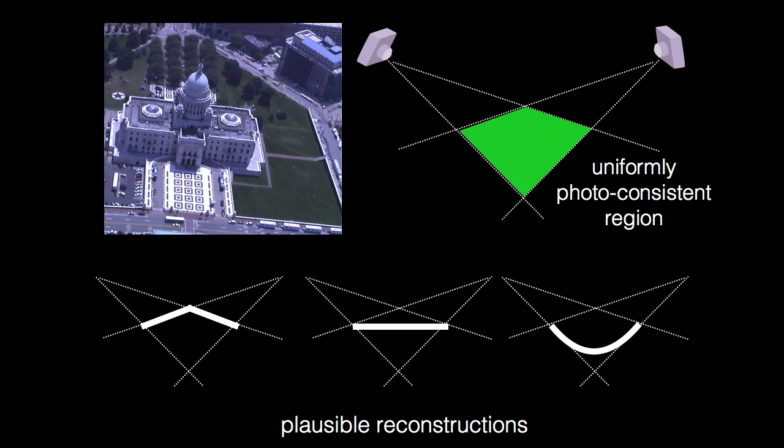In contrast to the maximum a posteriori solution, the marginals reveal the underlying ambiguity in the reconstruction. Surfaces with little texture, such as the grass lawn in the photo, lead to reconstruction ambiguity.